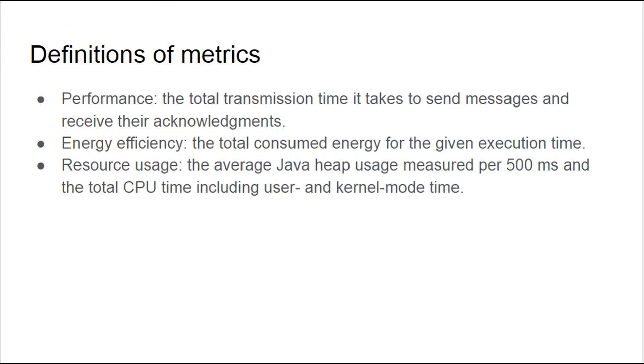Before we compare the various protocols, we need to look at the definitions of metrics by which they are compared. Performance means the time needed to send messages and receive their acknowledgements. Energy efficiency means the total energy consumed for a given execution time. Resource usage means the average Java heap usage measured every 500 milliseconds and the total CPU time.